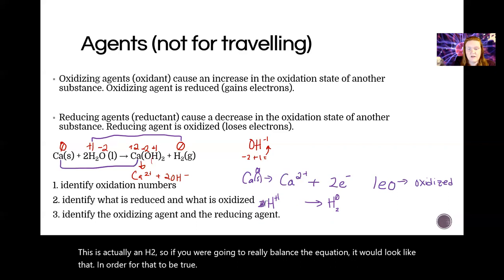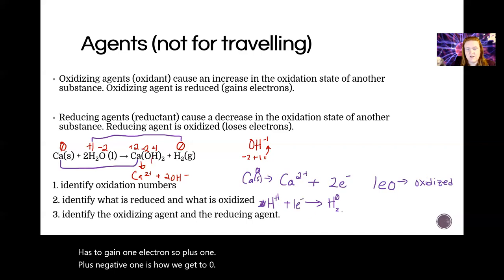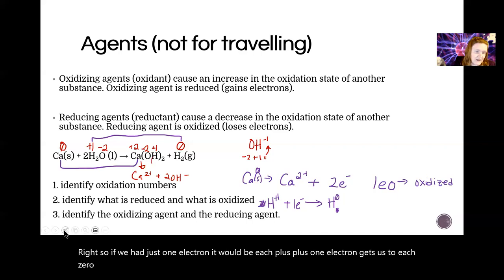In order for that to be true, each hydrogen has to gain one electron. So +1 plus -1 is how we get to zero. If we had just one electron it would be H⁺ plus one electron gets us to H⁰.